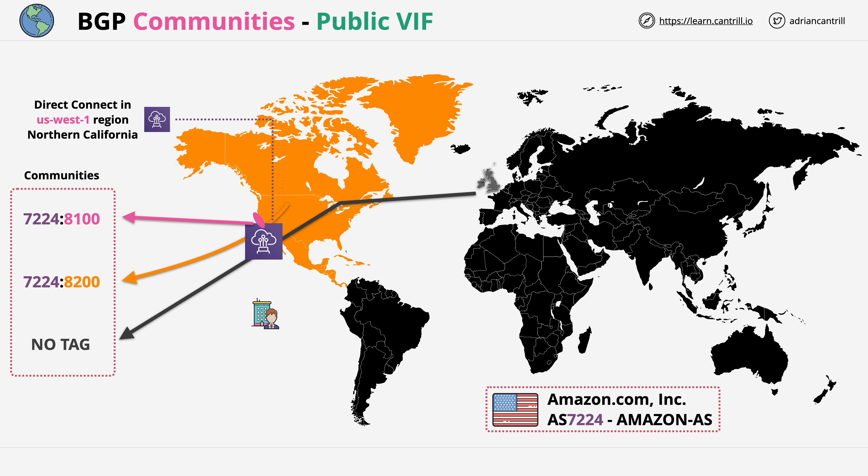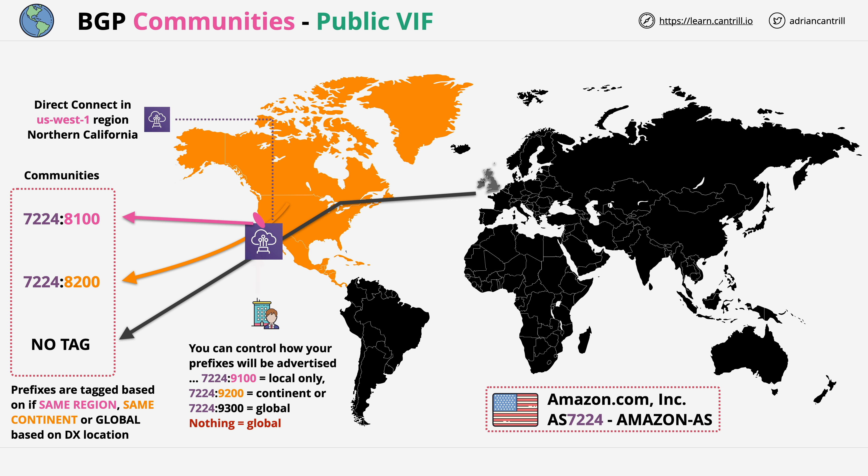Prefixes are tagged by AWS based on whether they're in the same region, same continent, or global — all relative to your DX location. A DX location in the UK, for example, would have prefixes for AWS public zone services in that region tagged with 7224:8100. You can do the same with routes you advertise: use 7224:9100 for local region only, 7224:9200 for the continent, and 7224:9300 for global. If you specify nothing, AWS assumes you're okay with global advertisement across the AWS network.